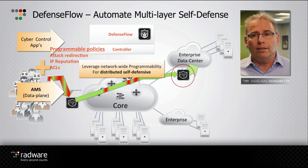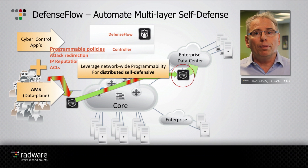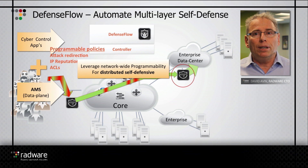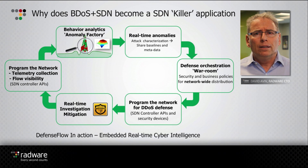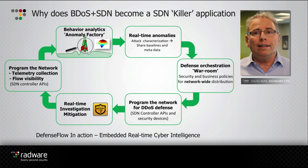When we look at it, we can see that here we have a combination of the data plane — which is the Defense Pro mitigation — and the control plane, the Defense Flow application. In a nutshell, the BDOS plus SDN system becomes, as we call it, the SDN killer application, by utilizing a complete control loop incorporating the network telemetry, the cyber detection algorithm, the automation of attack response, and setting the network to operate as a self-defensive network.